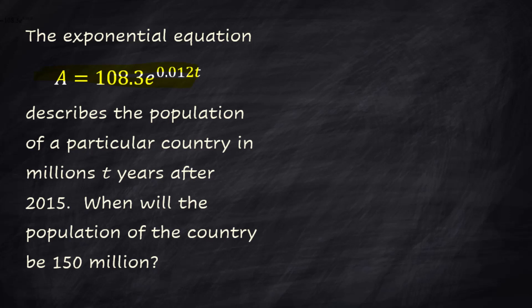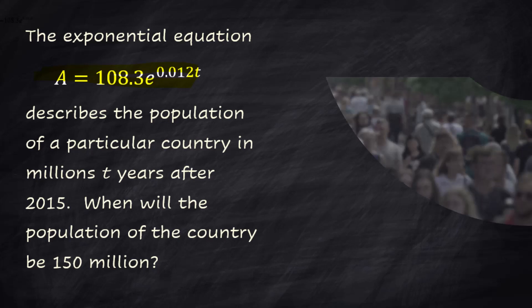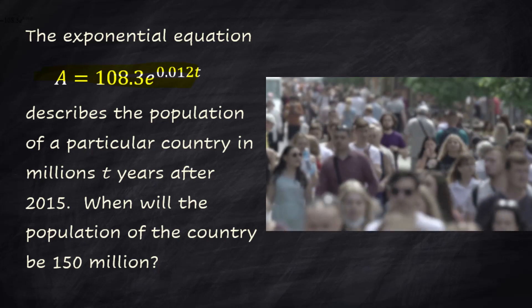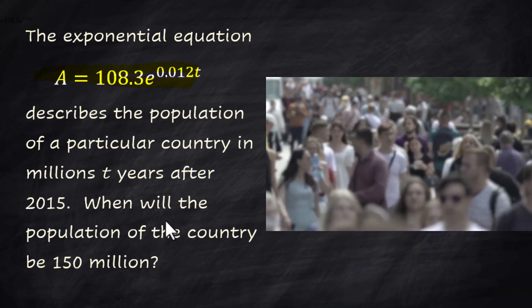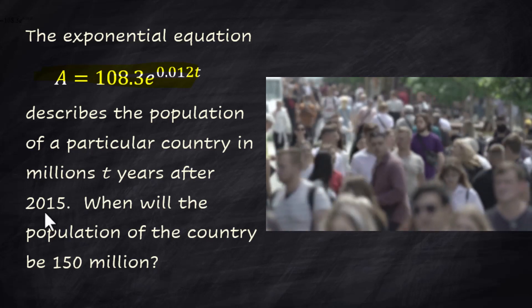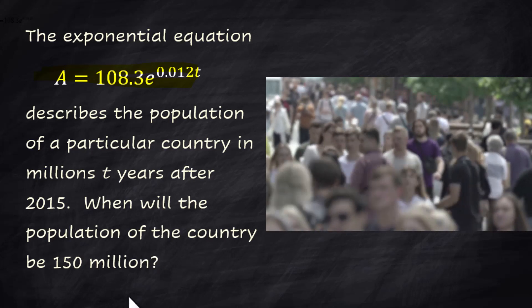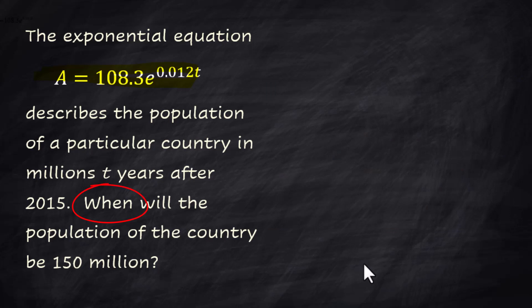The exponential equation A equals 108.3 e to the 0.012t describes the population of a particular country in millions t years after 2015. When will the population of the country be 150 million? Well it's a when question, that means we're looking for time which means t is the variable that we are attempting to find.